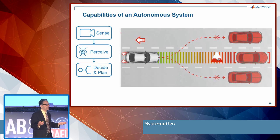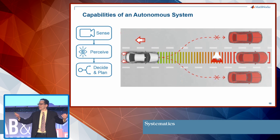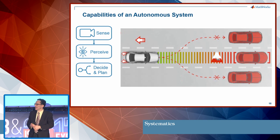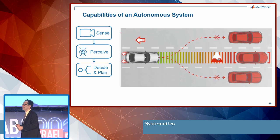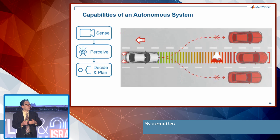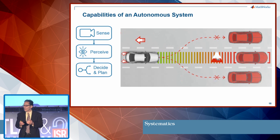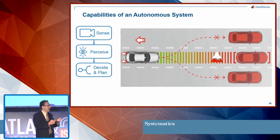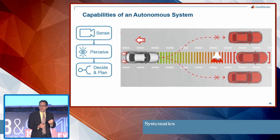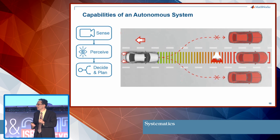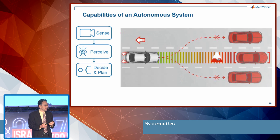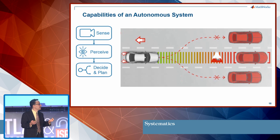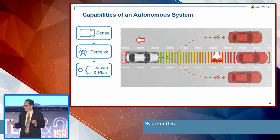Next you move into decision and planning. You've understood what's around you, and now you have to figure out how to make the right decision. In the case of a car, if there's an obstacle in front of you, do you slow down, swerve, or both? If you change lanes, do you go left or right? All of these decisions have to be made instantly using all of the information and learning built up over time. Companies are applying techniques like optimization for things like path planning.